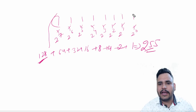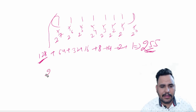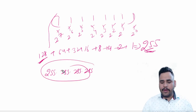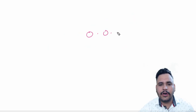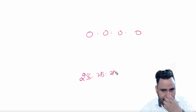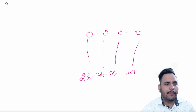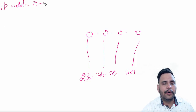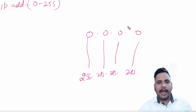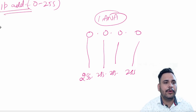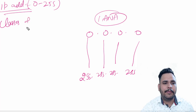If 8 bits of all 1s becomes 255 in decimal, then the highest IP address should be 255.255.255.255. So basically, 0.0.0.0 is the lowest address and 255.255.255.255 is the highest address, so my IP address range is 0 to 255. But IANA — Internet Assigned Numbers Authority — divided this IP address into five classes.